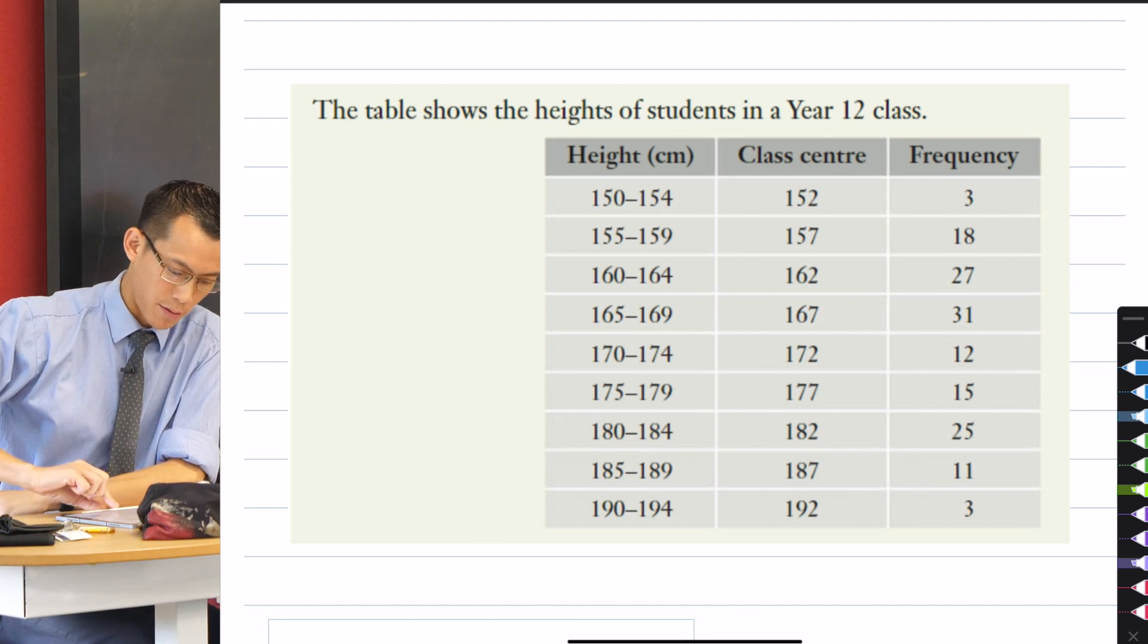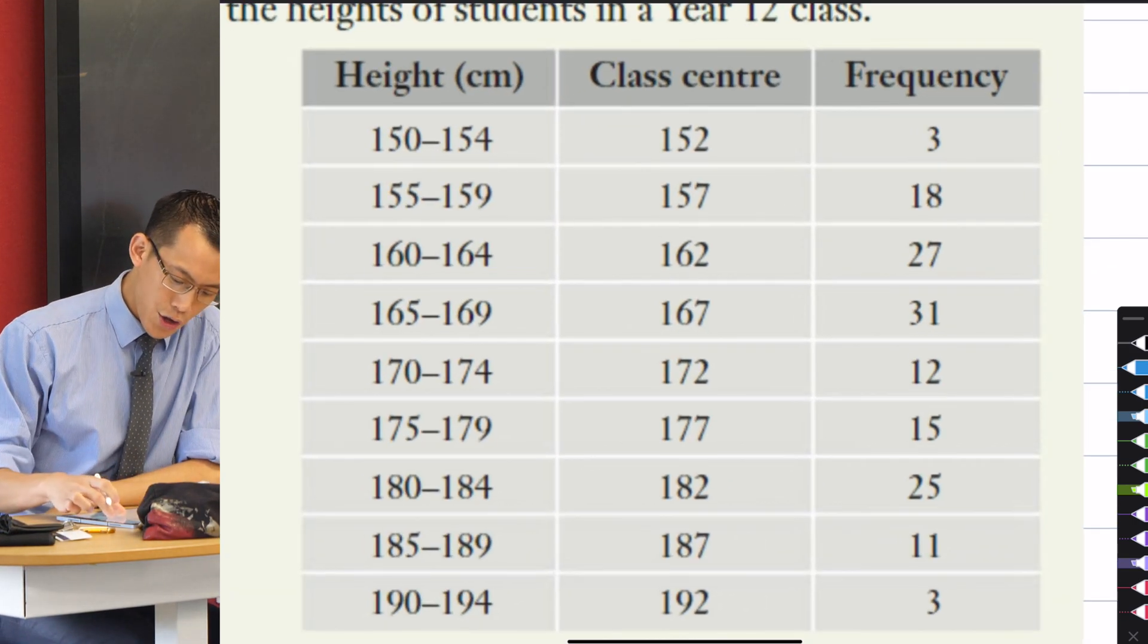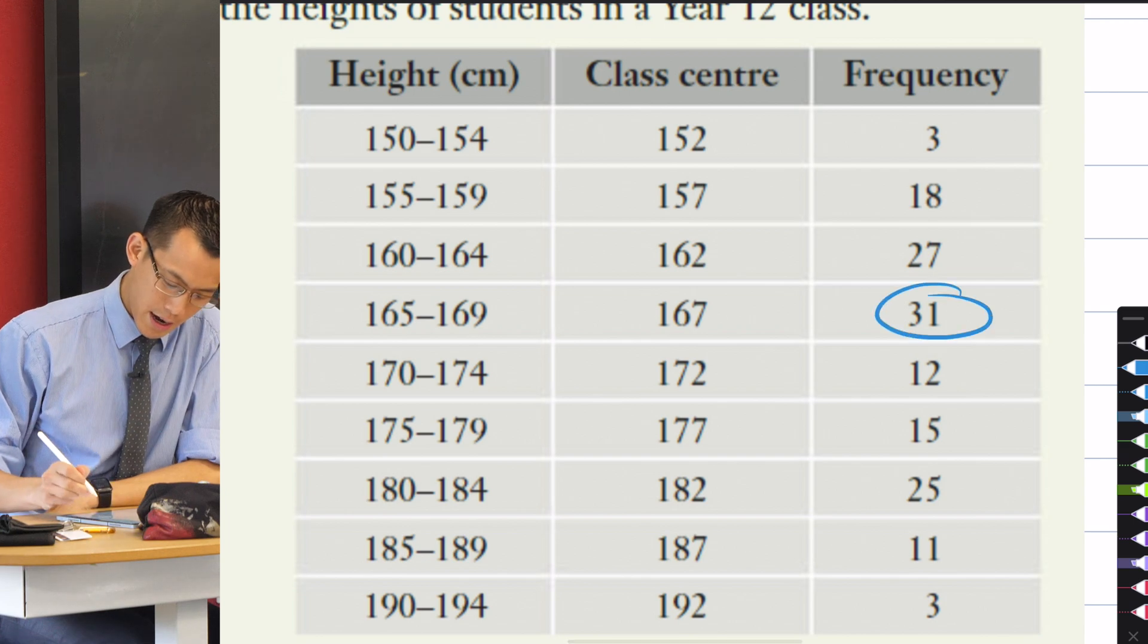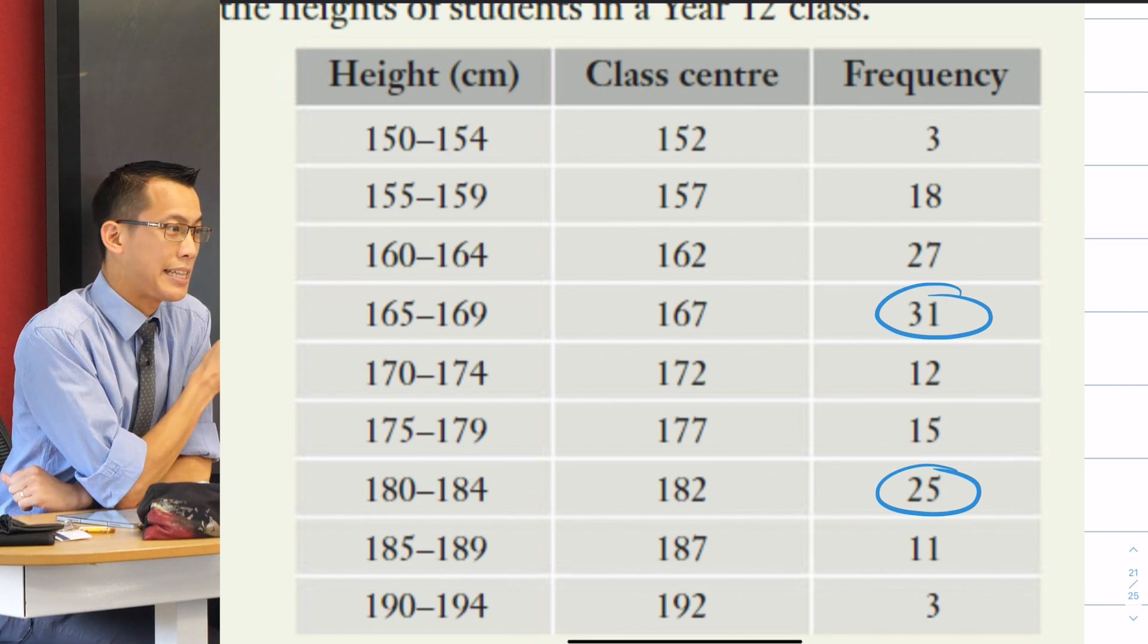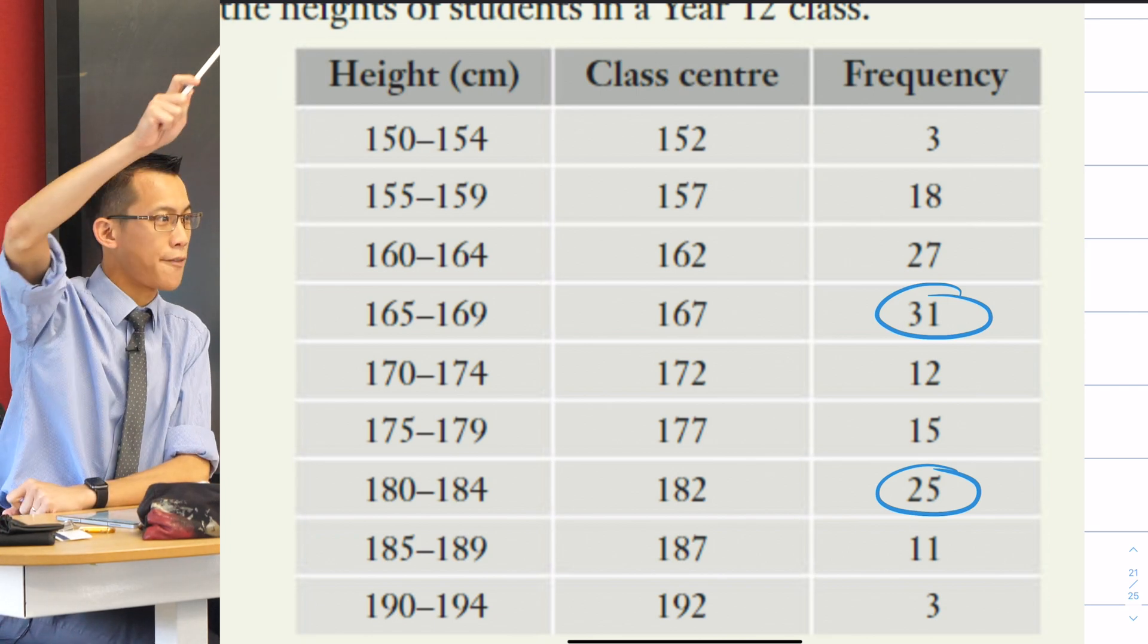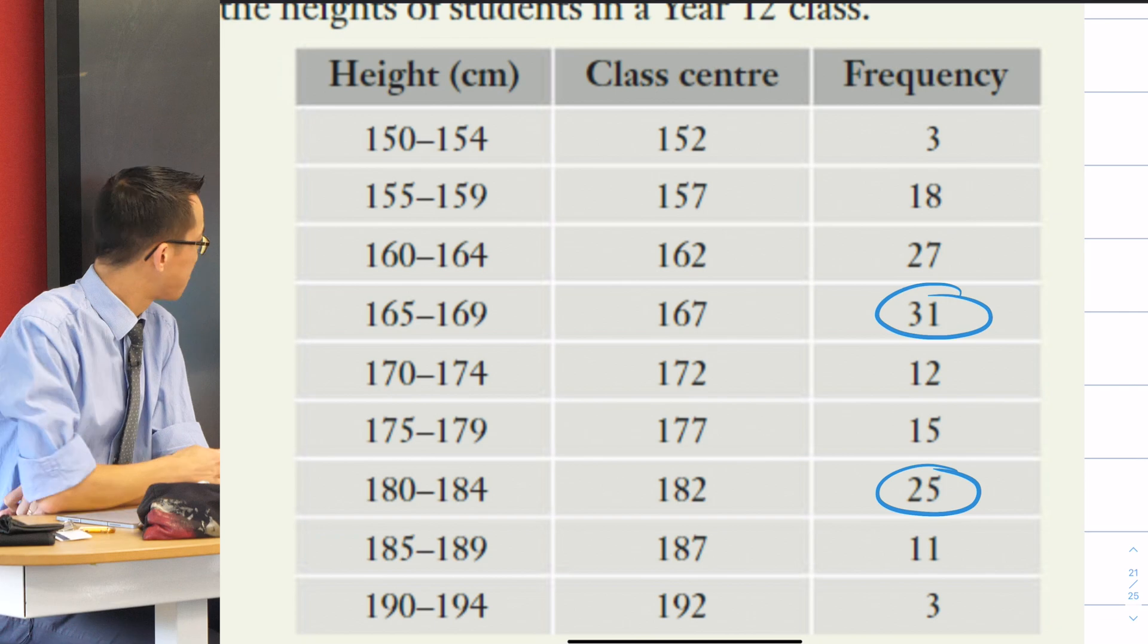If you had a look, I'll just highlight it for you - you've got the mode here, and then the mode here. They're not exactly the same, 31 and 25, but they don't need to be for the clear peaks to be observable if you, for example, graphed the data, right?